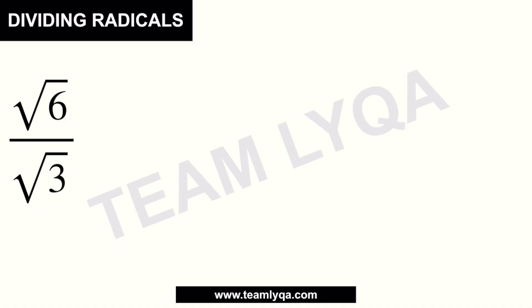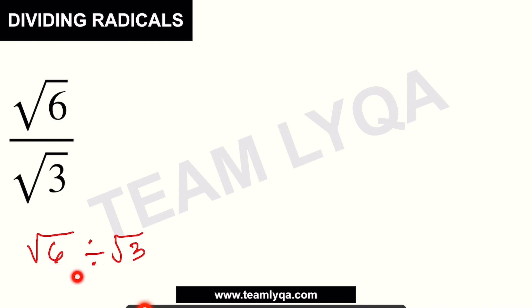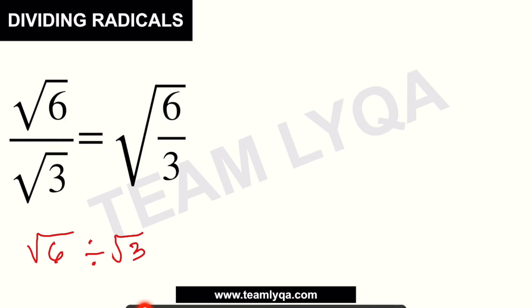For now, let's start with this really simple example. You have the square root of 6 divided by the square root of 3. Whether it's written as a division or as a fraction, they mean the same thing — just like 1 divided by 2 is the same as 1 over 2. The way we handle fractions is the same way we'll handle these radicals. Since both have the same index number of 2, we can combine them under one radical sign, giving us the square root of 6 over 3.